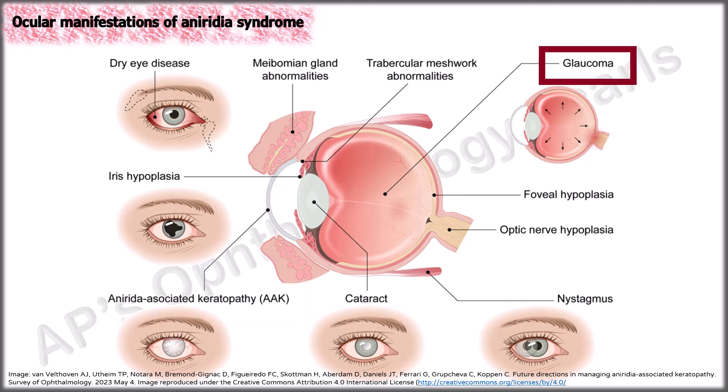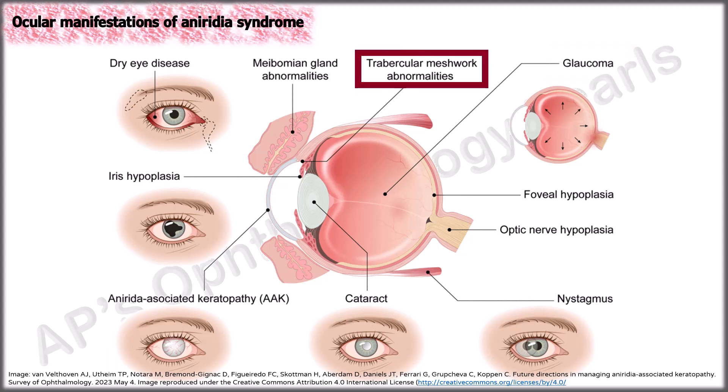A couple of mechanisms have been advocated for causing glaucoma: 1. The presence of tissue between the iris stump and angle, which eventually covers a significant portion of the angle wall. 2. Avascular tissue that similarly closes off the angle. 3. Absence of Schlemm's canal and trabecular meshwork abnormalities.